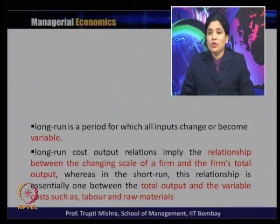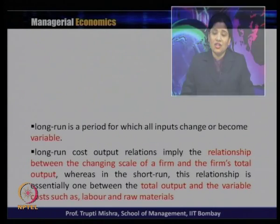In long run cost-output relationship, it is basically a relationship between the changing scale of a firm and the firm's total output. In the short run, the relationship is between the change in output and the change in variable inputs — a one-to-one relationship between total output, variable cost, including raw material and labor. In the long run it is a scale relationship, whereas in the short run it is between total output and variable cost.